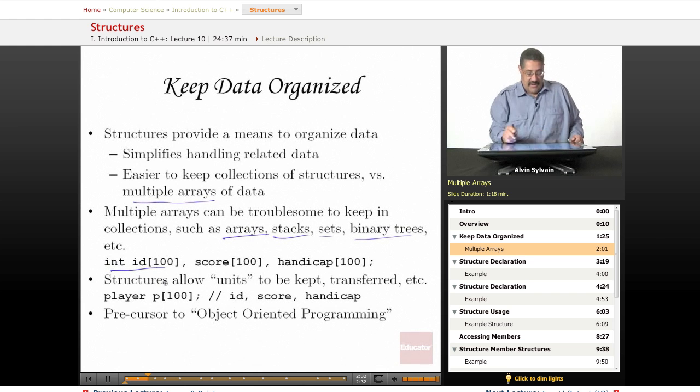Here are a few examples: an array of IDs, we have a hundred IDs, a hundred scores, a hundred handicaps. How do you put these three into a stack or into a set? You'd have to have three collections, three arrays, three stacks, three binary trees.